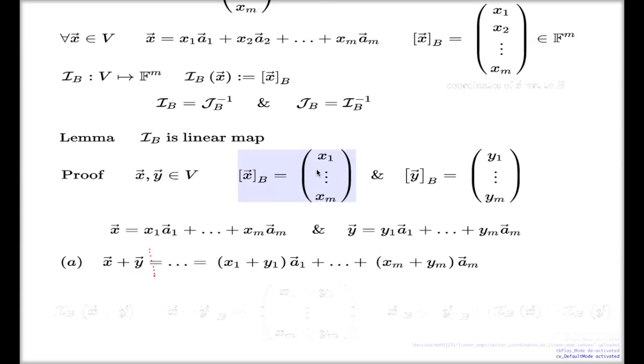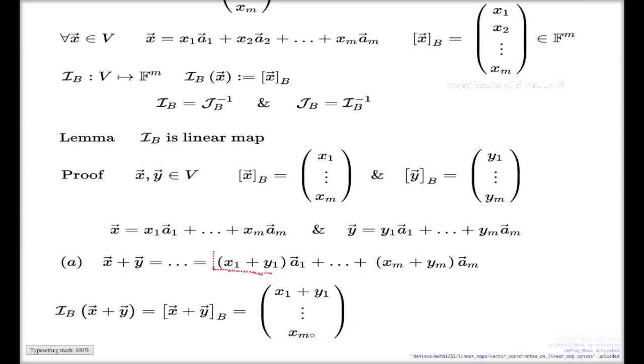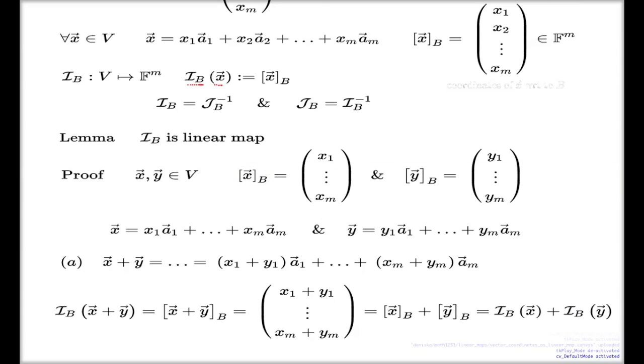If I now apply my I sub B map to a sum of two vectors, which by definition is the coordinates of these two vectors with respect to the basis B, this line suggests that the coordinates are x_1 plus y_1, and the last one x_m plus y_m. Operations on m-tuples suggest that this one m-tuple is the sum of these two individual m-tuples. And these two objects individually, they're just I sub B of x and I sub B of y. And here's my verification of the first property of a linear map for the I sub B map.